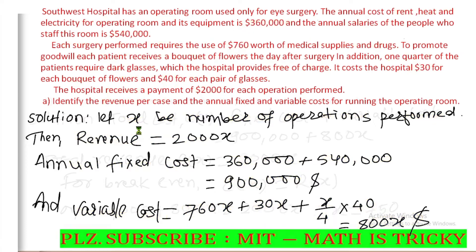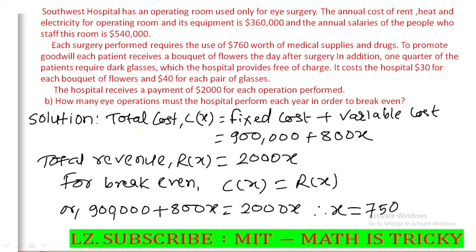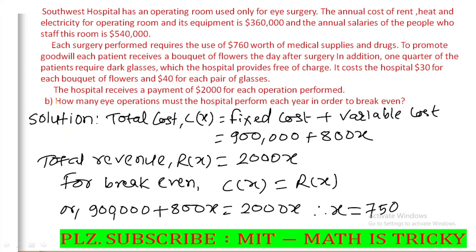Second question: how many operations must the hospital perform each year in order to break even? The condition is total cost equals total revenue. Total cost equals fixed cost plus variable cost, so that is 98,000 plus 800x. Total revenue is 2,000 per operation.